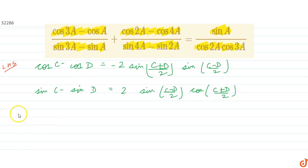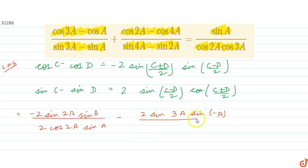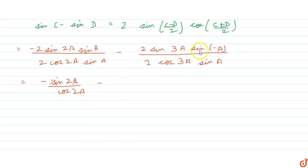Using these two formulas, the left hand side becomes: minus 2 sin2a times sina divided by 2 cos2a times sina, and minus 2 sin3a times sina in the second fraction. Since sin(minus theta) equals minus sin theta, this simplifies to minus sin2a divided by cos2a.